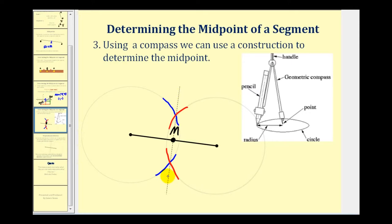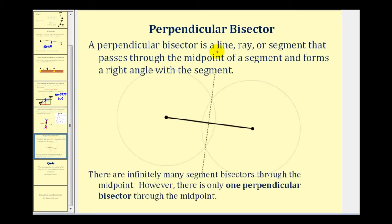There's also something special about this segment drawn through the intersection of these arcs — it's the perpendicular bisector of the segment. A perpendicular bisector is a line, ray, or segment that passes through the midpoint of a segment and forms a right angle with the segment. This dashed segment bisects the segment, so this segment here is congruent with this segment here, and it also forms a right angle with the given segment. We can easily convert this segment into a ray or a line if desired. There are an infinite number of segment bisectors through the midpoint, but there's only one perpendicular bisector — the one we sketched here.